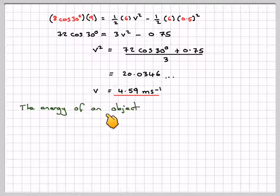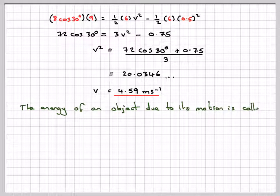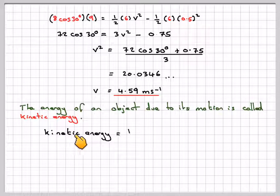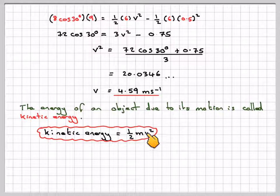The energy of an object due to its motion is called kinetic energy and kinetic energy is equal to 1 half MV squared.